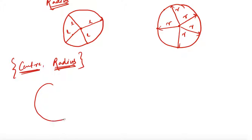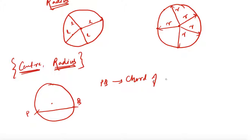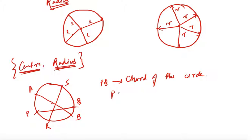I have a circle with center O and radius R. Let me take any two points — say point P and point Q on the boundary. If I join P and Q through a straight line, this line PQ is known as a chord of the circle. It may or may not pass through the center. Similarly, joining R and S, or A and B, gives other chords. PQ, RS, and AB are all examples of chords of the circle.